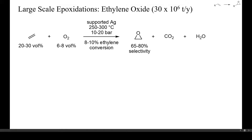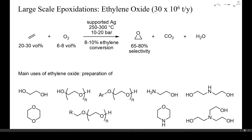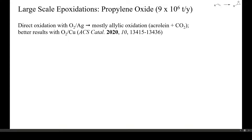Currently, about 30 million tons of ethylene oxide are being prepared this way every year. Ethylene oxide is mainly used for preparing ethylene glycol, dioxane, polyethylene glycol, and by treatment with ammonia, ethanolamines and morpholine. Another epoxide prepared on a huge scale is propylene oxide.